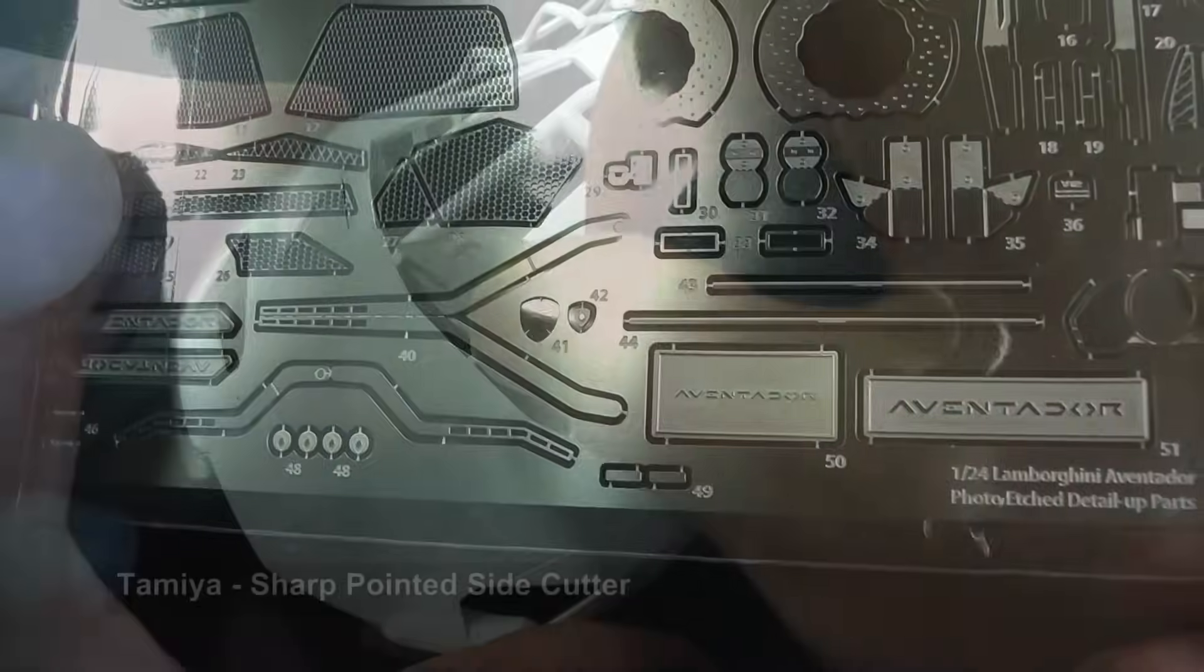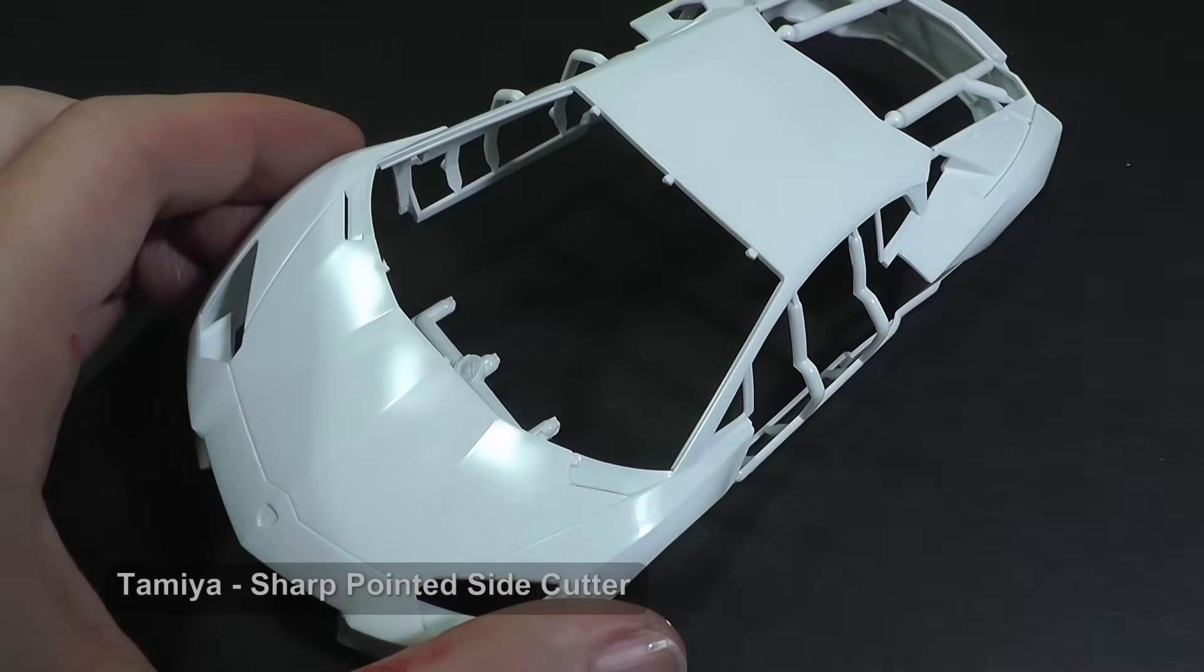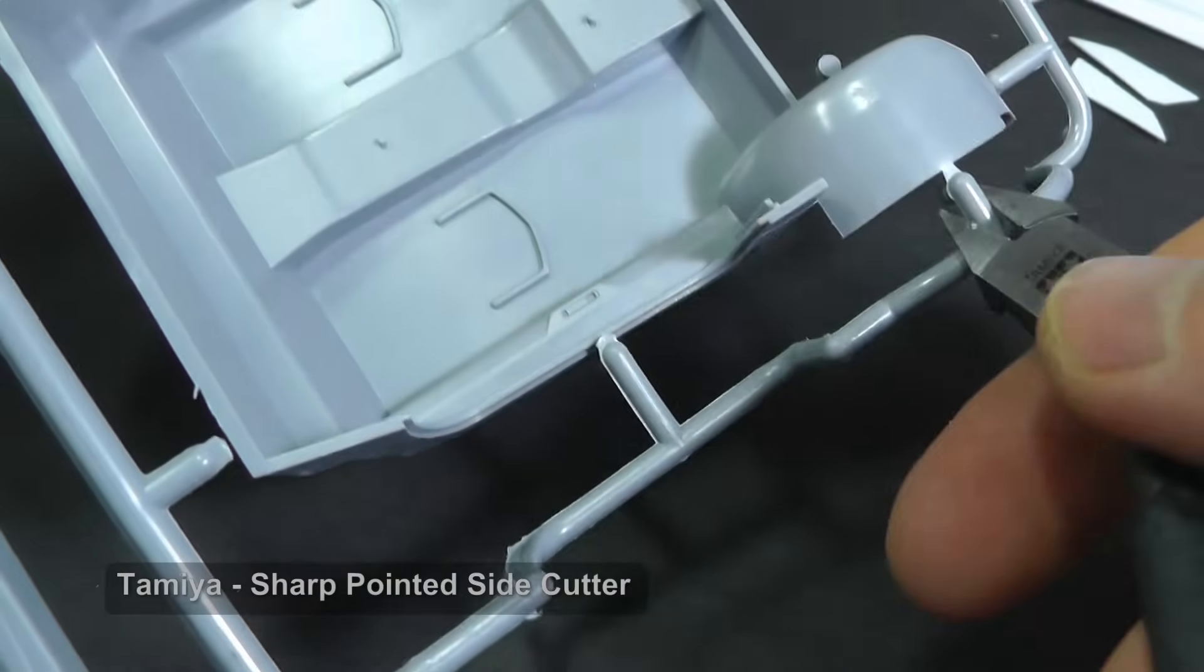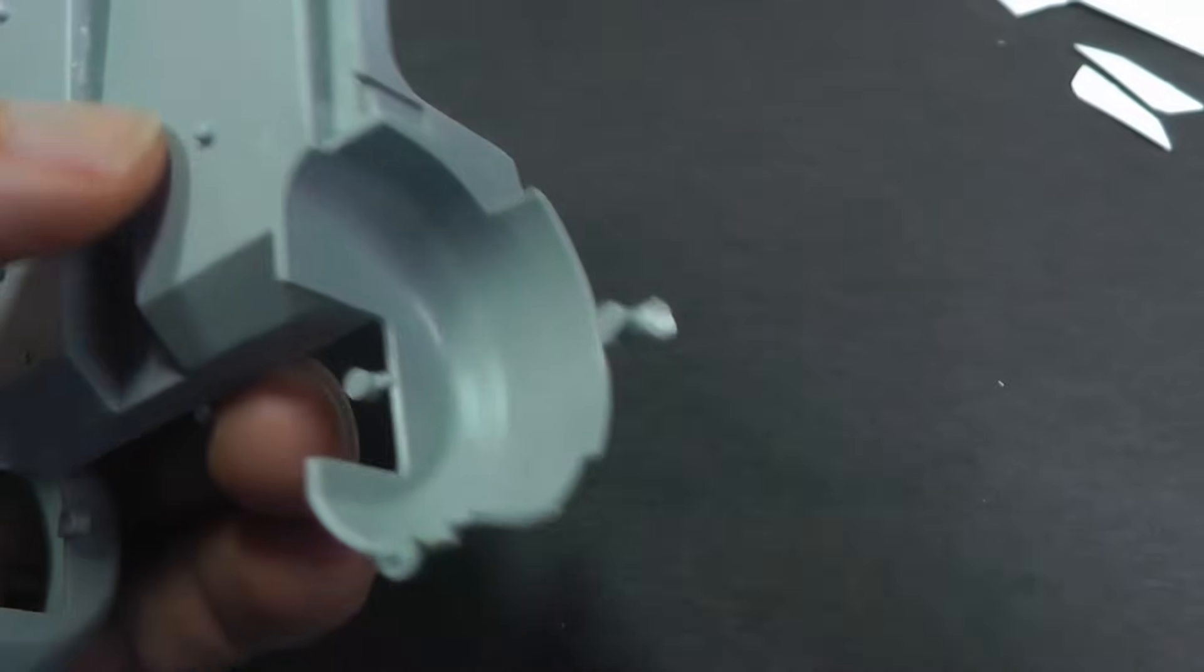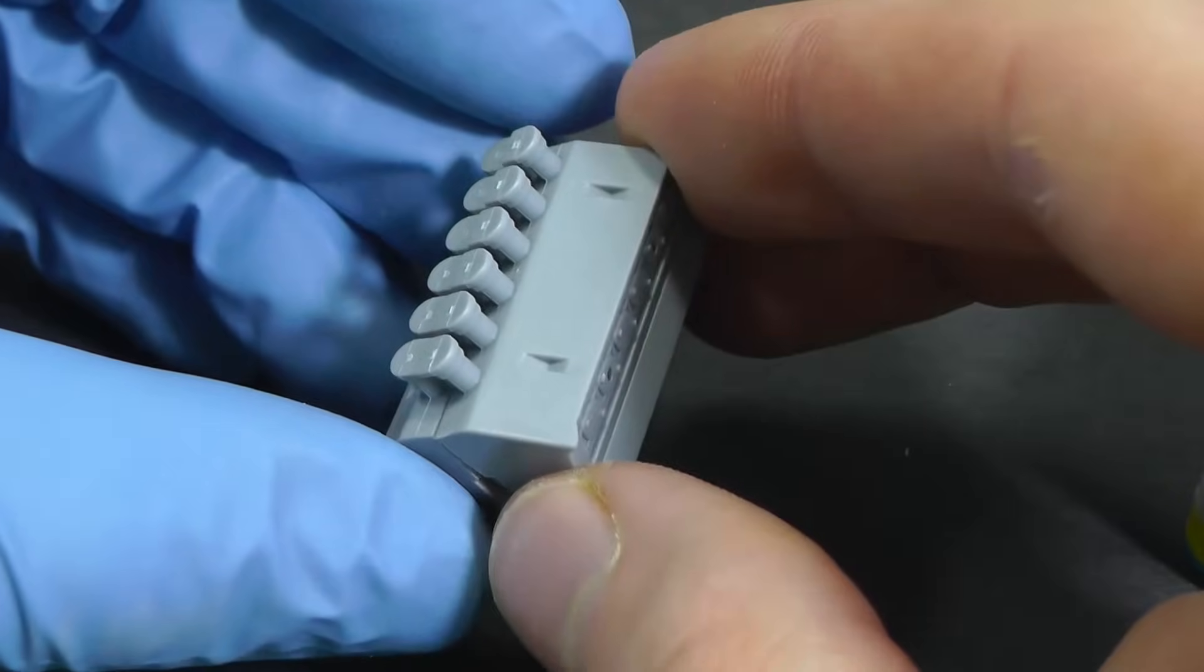So, I remove parts from sprue, or rather in this case sprue from plastic part. Now, I glue parts with a super thin glue.